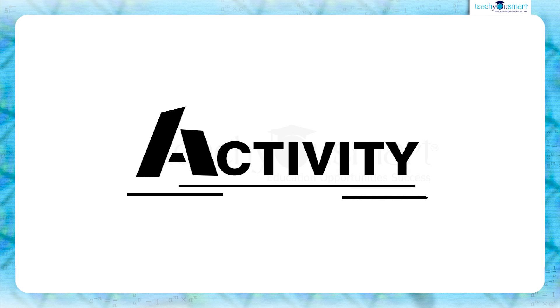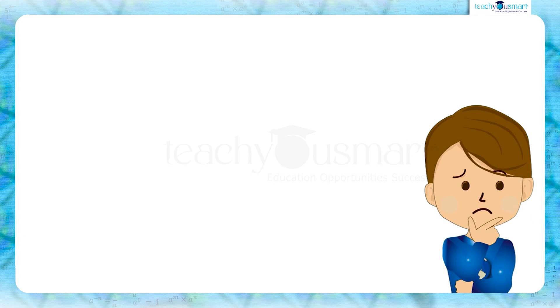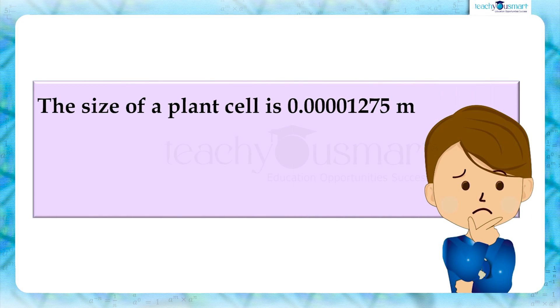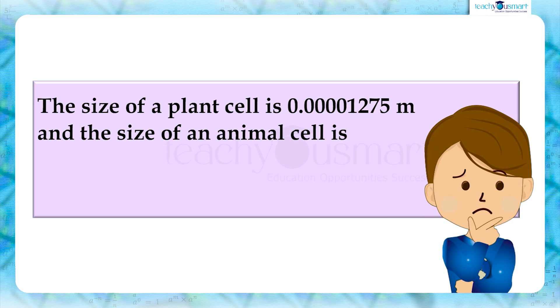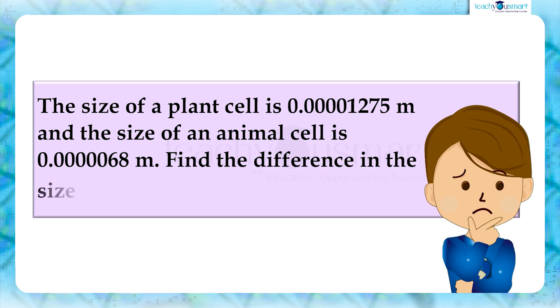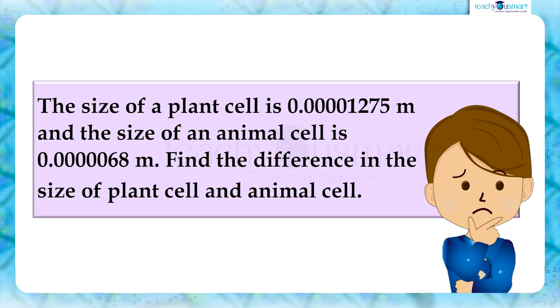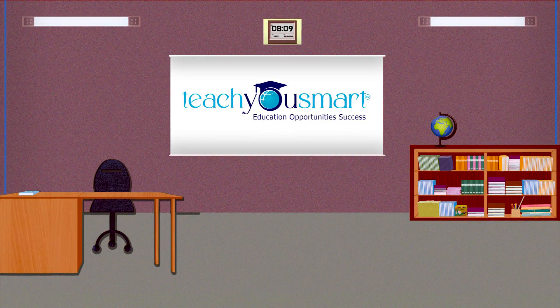Before winding up, let's check how much you understood by doing an activity. The size of a plant cell is 0.00001275 meters and the size of an animal cell is 0.000068 meters. Find the difference in size of the plant cell and animal cell. Hope you all understood the chapter well. See you all in the next class with another interesting topic.